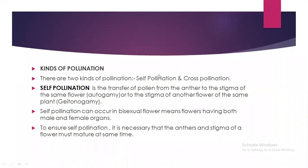There are two kinds of pollination: self-pollination and cross-pollination. Self-pollination is the transfer of pollen from the anther to the stigma of the same flower, or to the stigma of another flower of the same plant. Self-pollination can occur in bisexual flowers, meaning flowers having both male and female organs. To ensure self-pollination, it is necessary that the anthers and stigma of a flower must mature at the same time.